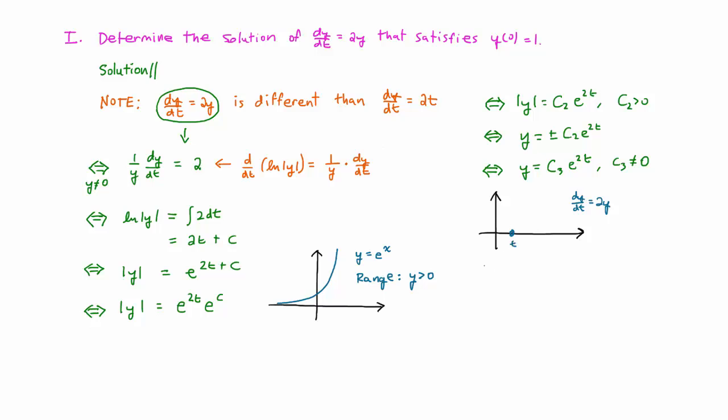In that case, we know that at this point, dy/dt is equal to 2 times the y-coordinate of that point, which is zero, and so dy/dt is just zero.